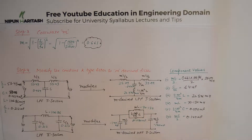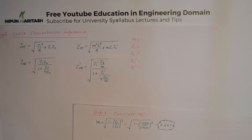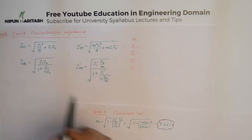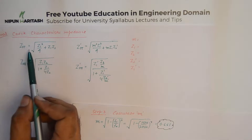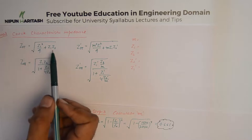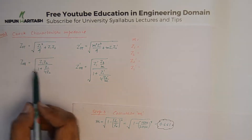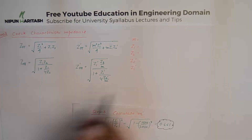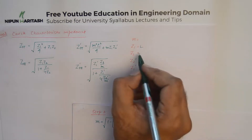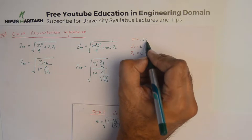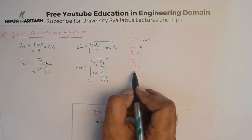Our constant K type filters have been modified into m-derived filters. As an optional exercise for your understanding, we know that the impedance of the T section is given by a formula where Z1 is the series impedance and Z2 is the shunt impedance, and Z0-pi is given by another formula. In our case, Z1 is the inductor L, Z2 is the capacitor C, and m = 0.661.